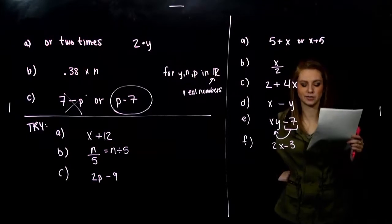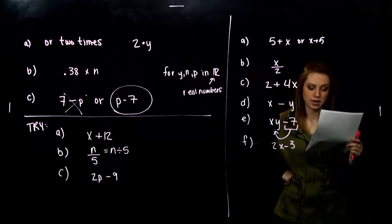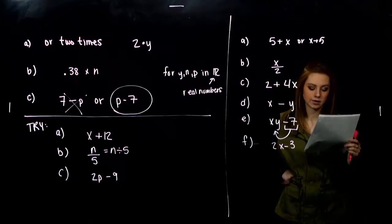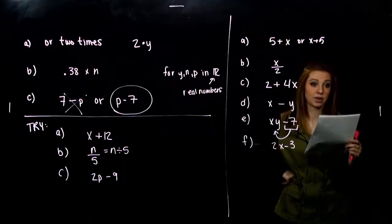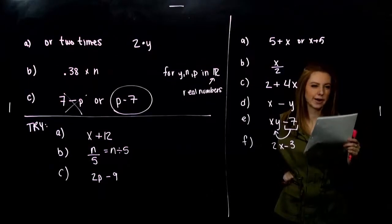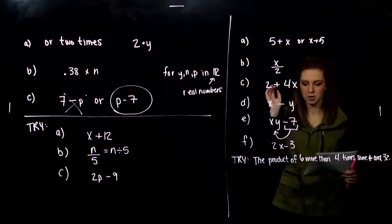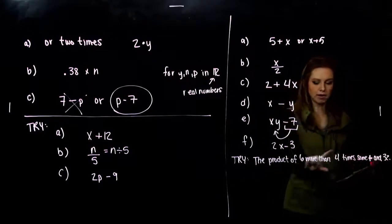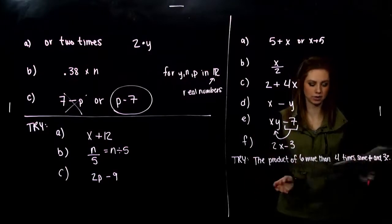Alright. So a little bit of a difficult one. Challenge for you. Translate the following into an algebraic expression. The product of six more than four times some number and 32. Give that a try. So you might be a little bit confused or a little bit thrown off. But what I like to do if I have kind of a long sentence like this, is to write on the sentence. Parse it up as we go.